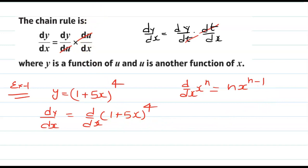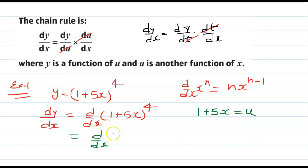Here there are two terms: 1 and 5x. So what I am going to do is suppose (1 plus 5x) as u. Once we write 1 plus 5x equal to u, we get d over dx of u to the power 4. Since we have u and x, we need to multiply by du over dx.